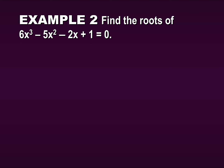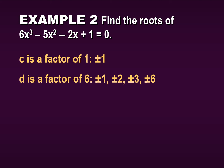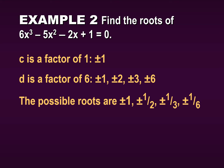Let's find the roots of 6x cubed minus 5x squared minus 2x plus 1. We could start randomly picking numbers to use in synthetic division, or we can find our possible roots and then test those using synthetic division. Our numerator c is a factor of the constant term 1, so c is plus or minus 1. Then d is a factor of the leading coefficient 6, so factors of 6 are plus or minus 1, 2, 3, and 6. Combining c over d gives plus or minus 1, 1 over 2, 1 over 3, and 1 over 6. Those are the only possible roots.